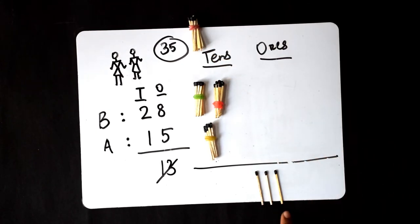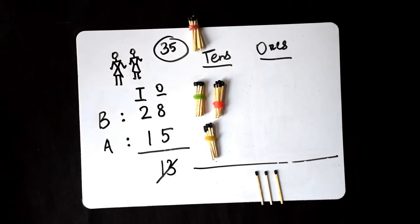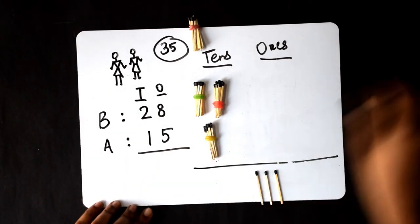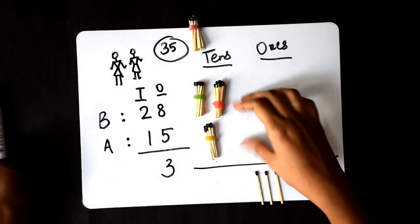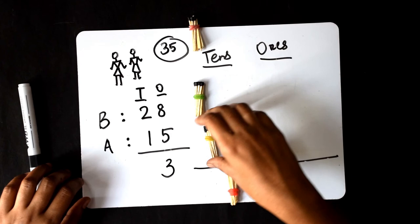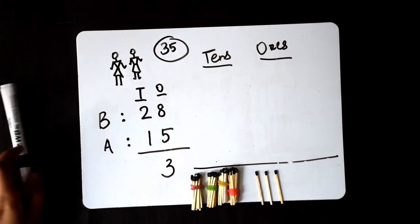Now, let's count how many ones are there. We have 1, 2, 3 ones. Let's put it down here. Now, let's put all the 10s together. We have 1, 2, 3, and 4 tens. Let's write that down here.